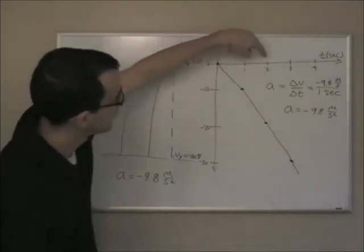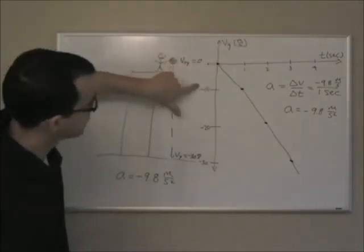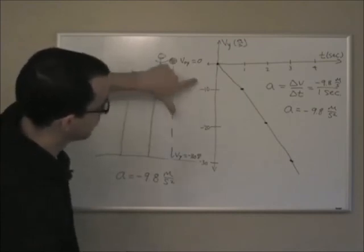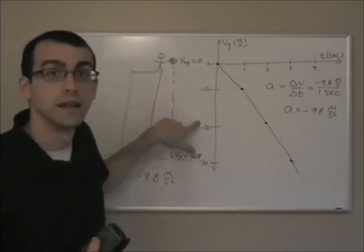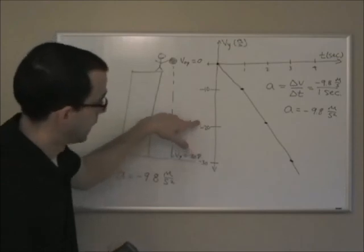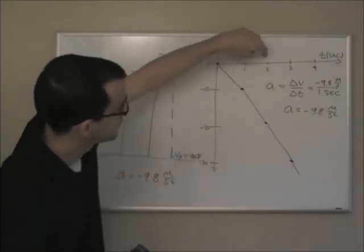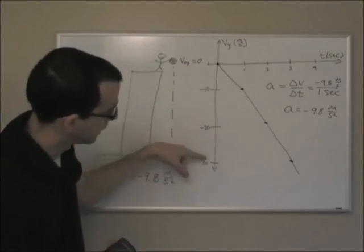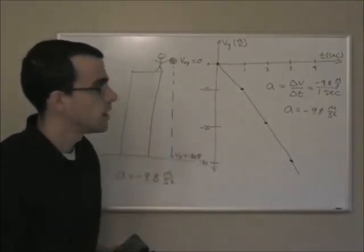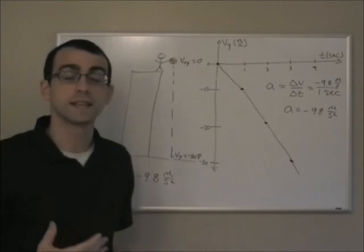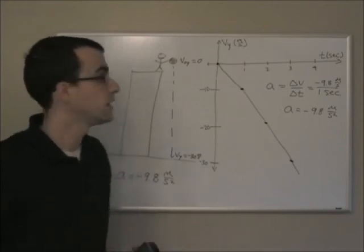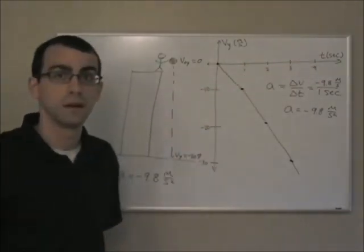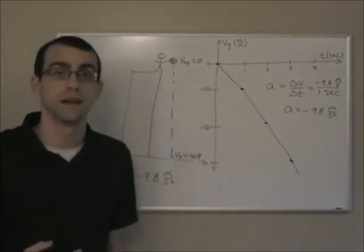So if we go from one second to two seconds, our velocity is now increasing again by another negative 9.8 meters per second. So we would get to somewhere around negative 20. And again, if we go from two seconds to three seconds, the velocity is now increased from about 20 to a little bit less than negative 30. And so you see that for each second that this object falls, the velocity is increasing by negative 9.8 meters per second. And all objects are going to do this that fall to the ground.